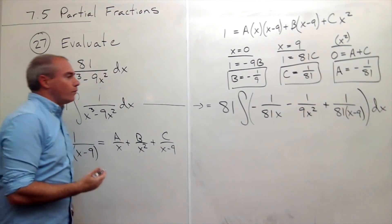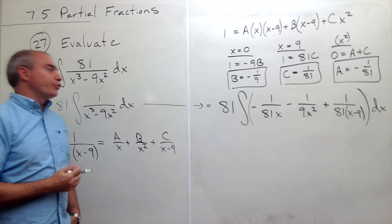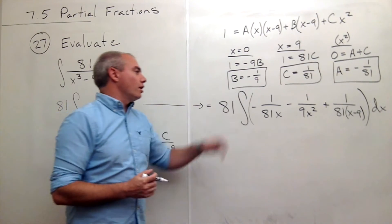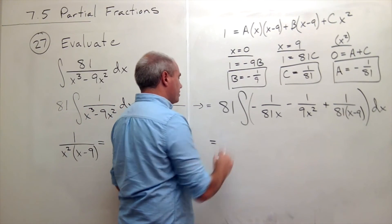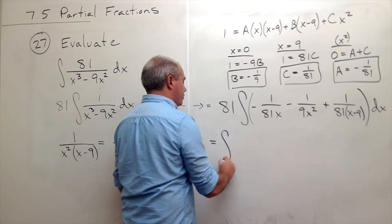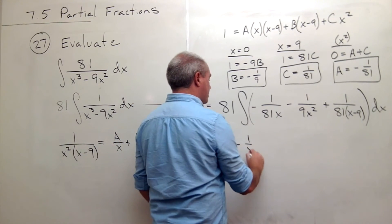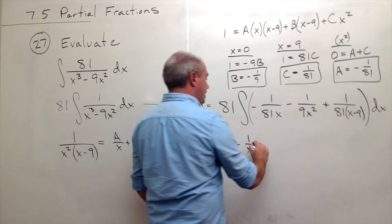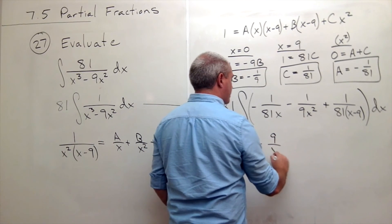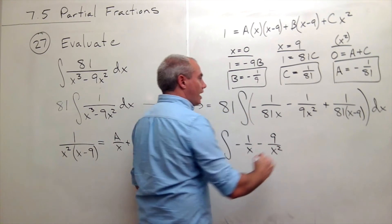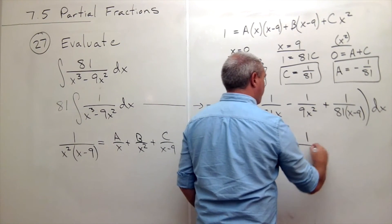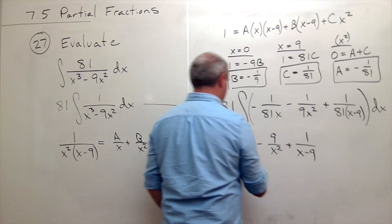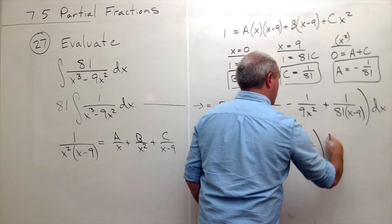You can see right now, if I multiplied through by the 81 at this point, a lot of things would clean up. So let's just do it. So I have an integral of negative 1 over x minus 9 over x squared plus 1 over x minus 9 dx.